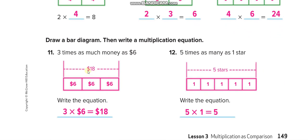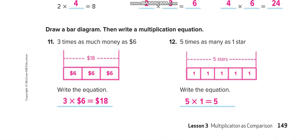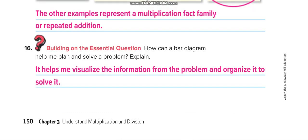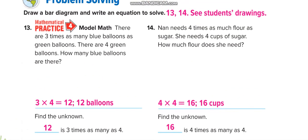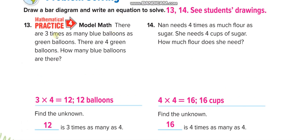Similarly, three boxes with six in each: three times six equals eighteen. Five times: five boxes with one star in each — five times one equals five. Let's move to the next page.